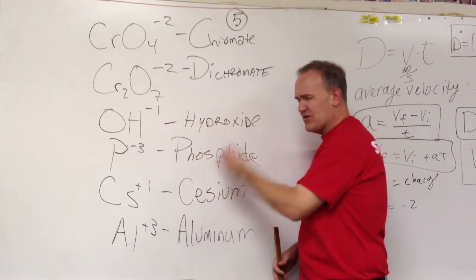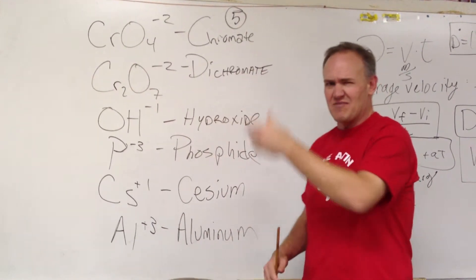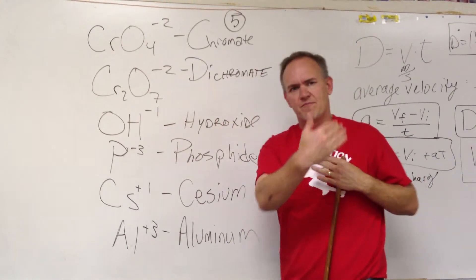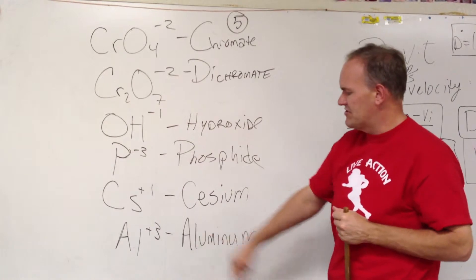Aluminum, it's in the plus 3 column. You may not remember that's the plus 3 column. It's kind of weird. It's over on the other side, across the transition metals, but it's still positive, and it's a plus 3.